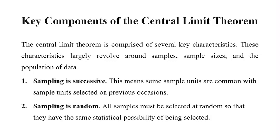So let's talk about the key components of the Central Limit Theorem. The Central Limit Theorem is comprised of several key characteristics, which largely revolve around the sample size and the population of the data. The first characteristic is that sampling is successive — this means that sampling units are common with the sample units selected on previous occasions.